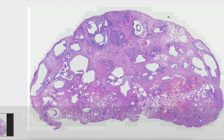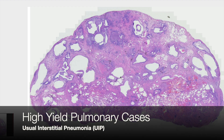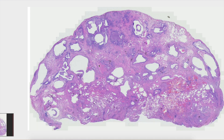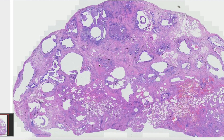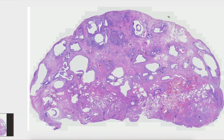Our first case of high yield pulmonary cases is usual interstitial pneumonia, or UIP. This is one of the important high yield cases you should know in medical lung pathology.